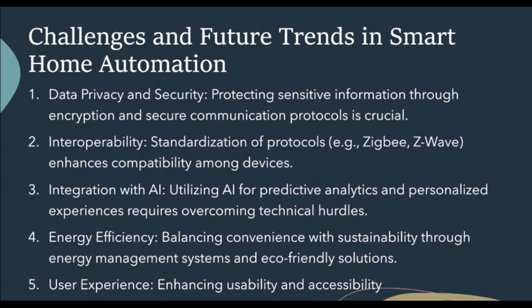Let's look at challenges and future trends in smart home automation. First, data privacy and security: protecting sensitive information through encryption and secure communication protocols is crucial. Second, interoperability: standardization of protocols such as ZigBee and Z-Wave enhances compatibility among devices. Third, integration with AI: utilizing AI for predictive analytics and personalized experiences requires overcoming technical hurdles. Fourth, energy efficiency: balancing convenience with sustainability through energy management systems and eco-friendly solutions. Fifth, user experience: enhancing usability and accessibility with intuitive interfaces and adaptive technologies.